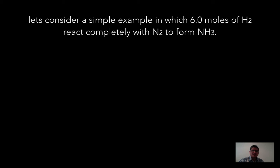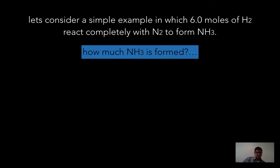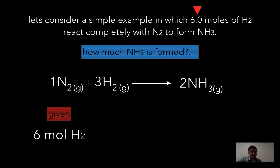Let's consider a simple example in which 6 moles of hydrogen react completely with nitrogen to form ammonia. The question is: how much ammonia is formed when I have 6 moles of hydrogen? If I have 1 mole of nitrogen, or 3 moles of hydrogen, then I will make 2 moles of ammonia — that's my theoretical yield, my ideal yield in a perfect environment.